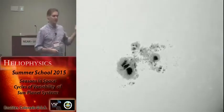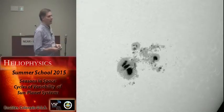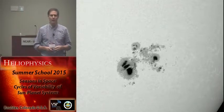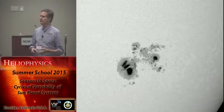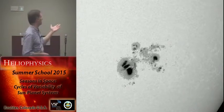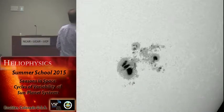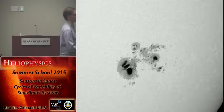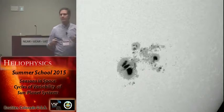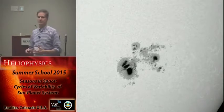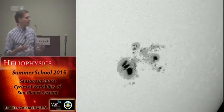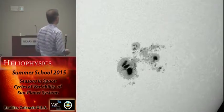This happens to be an extreme example — active region 12192 from October of last year, one of the largest sunspot groups of the last 30 years. But in general, sunspots are fairly small, and so the ability to modulate the solar irradiance, at least for emission from the photosphere, is relatively small.